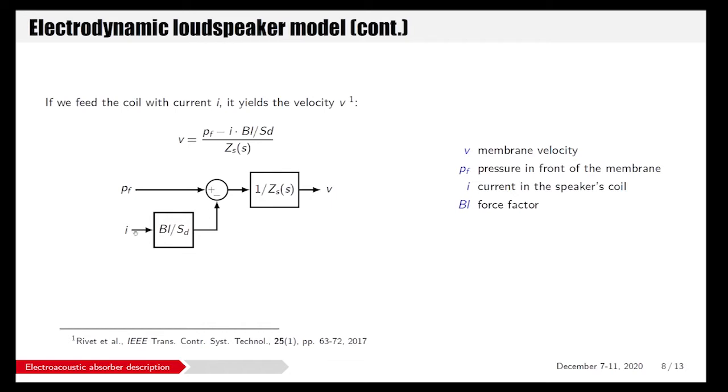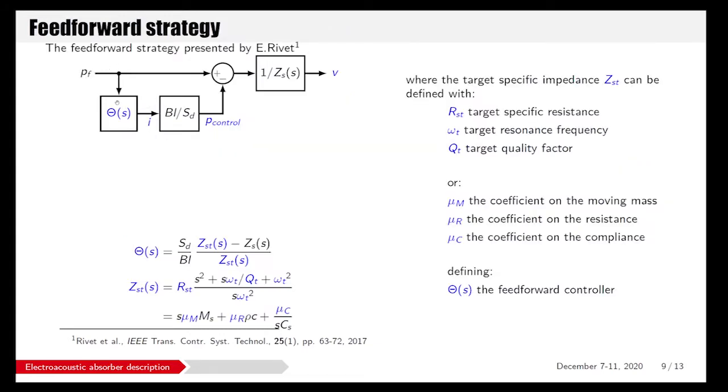Basically, if you feed the coil with a certain current, it gives a certain force that will add up with the pressure to change the velocity at the output. The principle of the electroacoustic absorber is to use a feed-forward scheme where you sense the pressure in front of the loudspeaker and filter it with a certain controller function that will yield a certain counter-pressure that will add up with the front pressure to adjust the velocity to a target one. So here, if you specify a target impedance Z_ST, which is basically defined as the specific resistance R_ST, the resonant frequency or quality factor, or you can also alternatively use another definition by just changing the parameters of the resonator—the mass, the resistance, and the compliance—by using coefficients mu_M, mu_R, mu_C. Then you can define the target controller that should apply to achieve the target impedance.